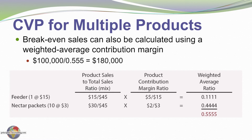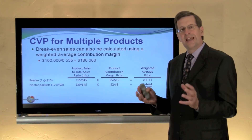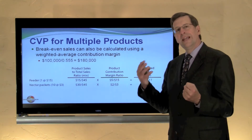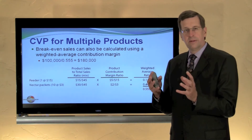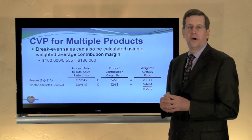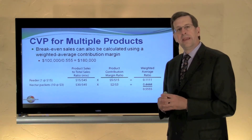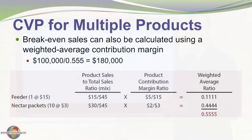Looking at the next table: the feeder sells for $15 and the nectar packets sell for $3, so a unit's sales are $15 for a feeder plus 10 nectar packets at $30, giving total unit sales of $45. Of that $45, $15 (or one-third) relates to the feeder, and $30 (or two-thirds) relates to the nectar packets. These are the product-sales-to-total-sales ratios shown in the first column.